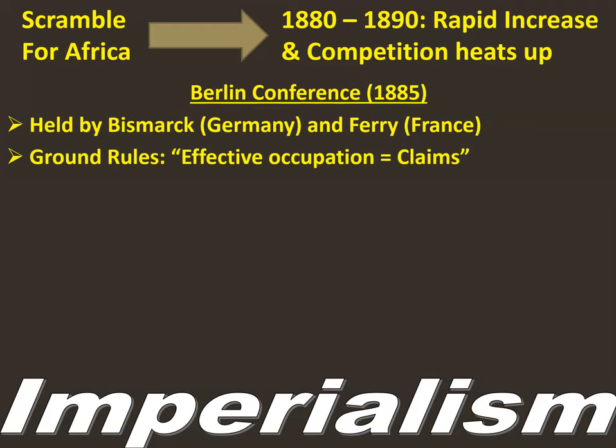The Berlin Conference states the ground rules for the occupation of Africa. What they say is that you have to effectively occupy an area in order to claim it on a map. You can't just be Queen Victoria in London and circle part of Africa and say it's yours — you need boots on the ground, actual soldiers or people from your country in those parts of Africa. That is discussed and ratified at the Berlin Conference.